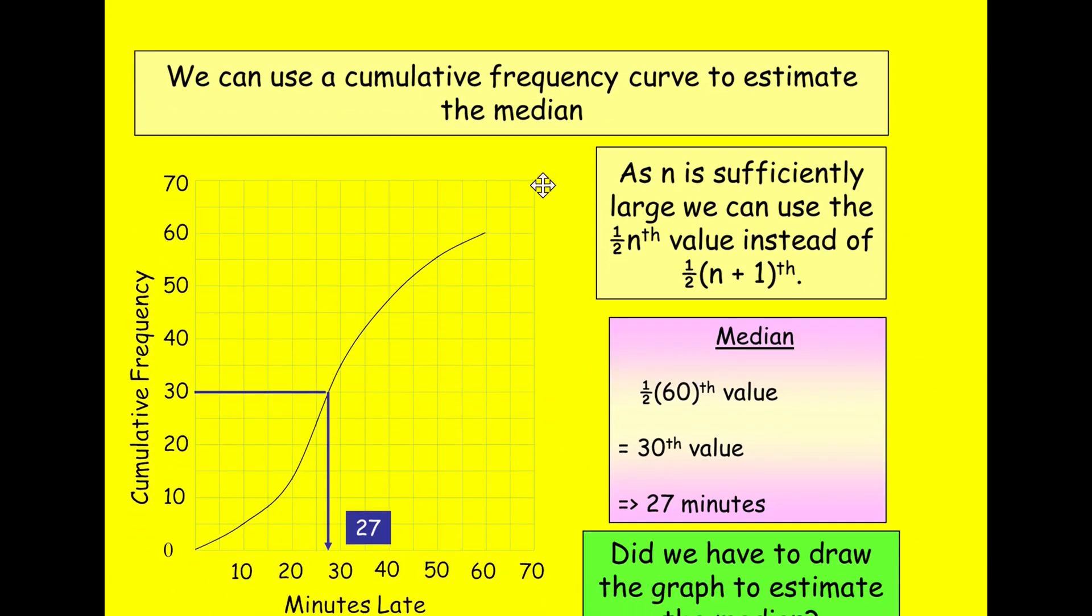I actually did this in that lesson on median. And in that case, you draw a graph and then you would find the value and read off the graph. Now notes when N is sufficiently large, and typically this is the case of a cumulative frequency, you don't worry about adding the one and dividing by two. You simply just divide by two to make life easy. Otherwise you're trying to measure 30.5. It's, you know, it's you're only like the width of the line is itself got a probably worth 0.5 or close to it. So just be aware of that.